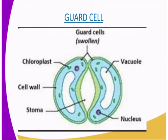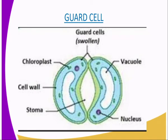Our second specialized plant cell is the guard cell. As you can see from our diagram, we have the chloroplast, the cell wall, the stoma — in plural we call it stomata — we also have the vacuole and the nucleus. In the stoma, there are two walls whereby the inner wall is thicker than the outer wall.